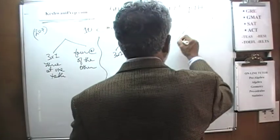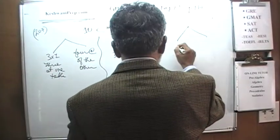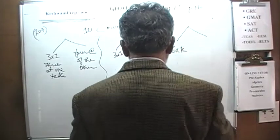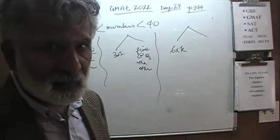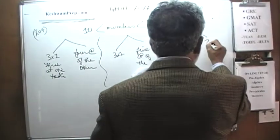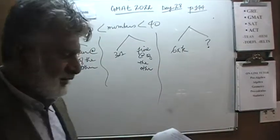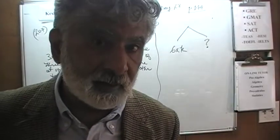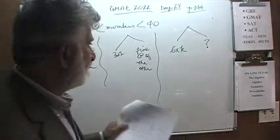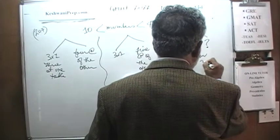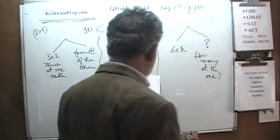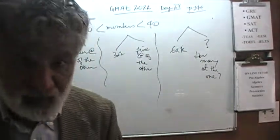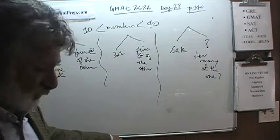Here is the question: if we have 6 people sitting at each table except the last table, how many people are sitting at the last table? We are told that the last table has fewer than 6. So let's see what we can do.